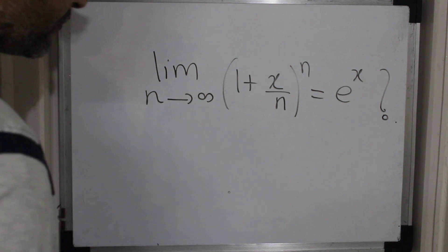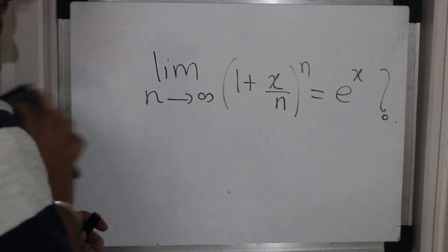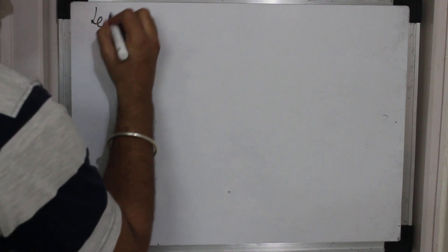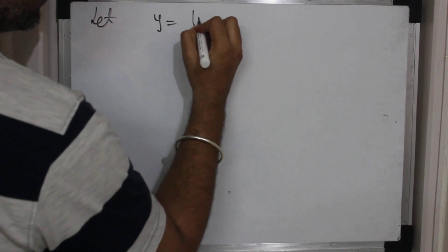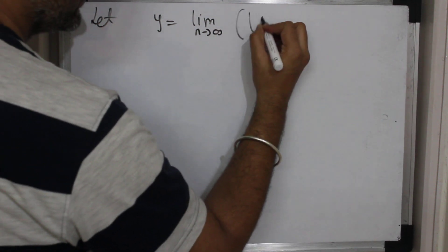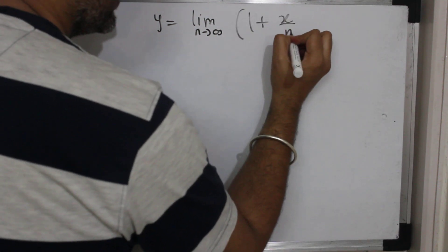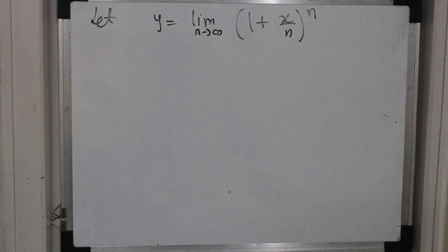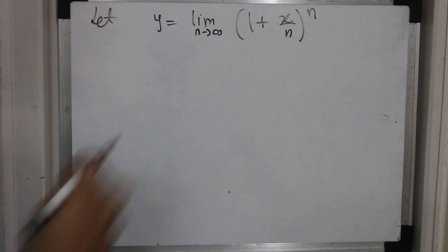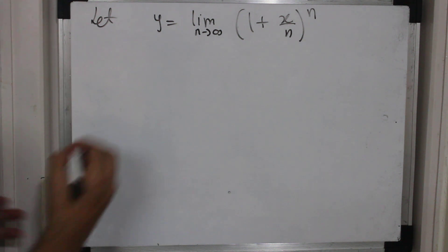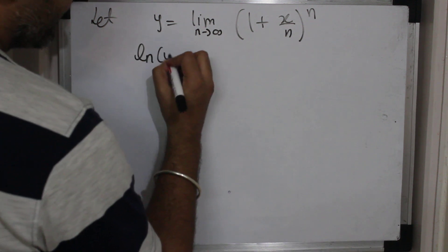It's a very simple proof, so let's try to see the proof of this limit. Let y be the limit as n goes to infinity of (1 + x/n) raised to n. I want to prove that y is nothing but e raised to x. Whenever you have a power in the picture and want to remove that power, the best way is to take log on both sides. So therefore if I take ln of y...